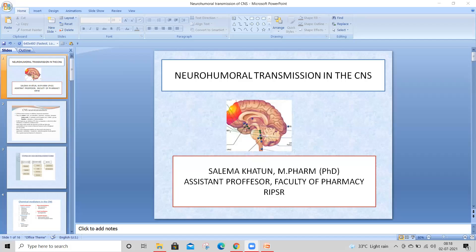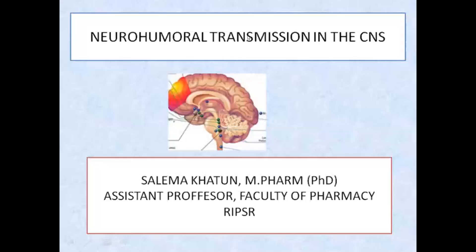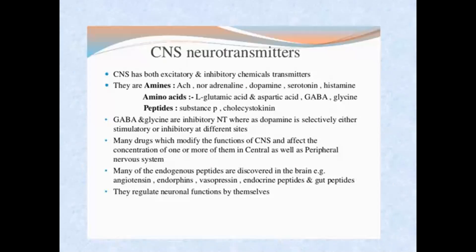First of all, you have to know the classification of neurotransmitters in CNS. You have to know two to three key points regarding each neurotransmitter.